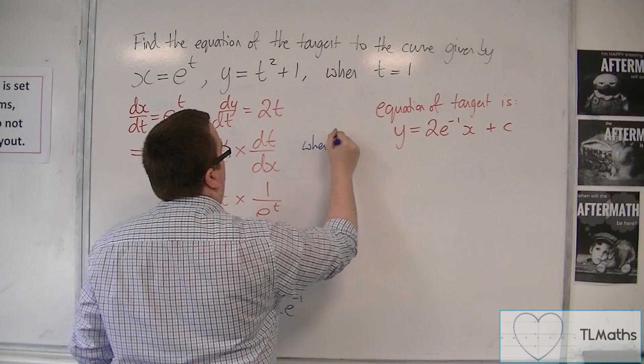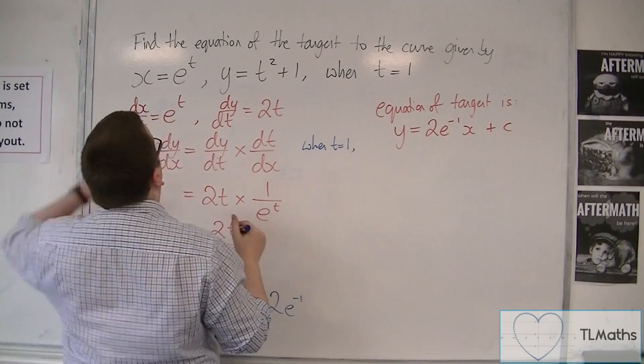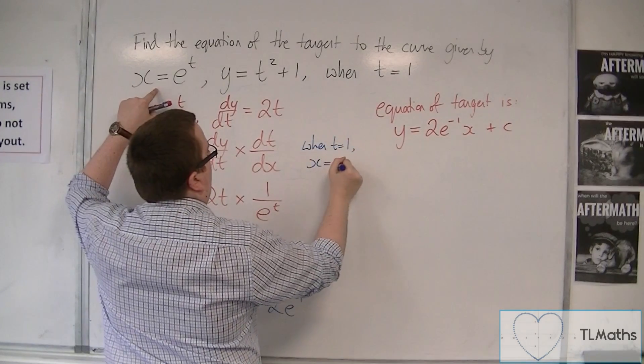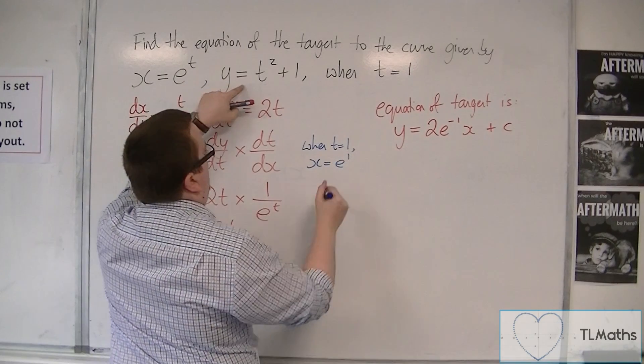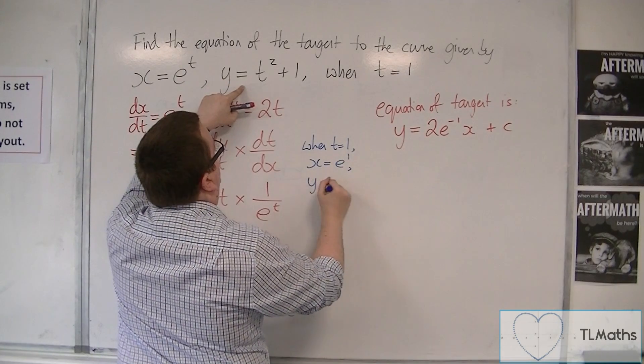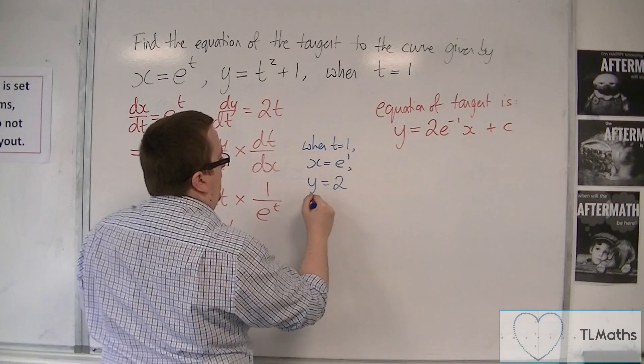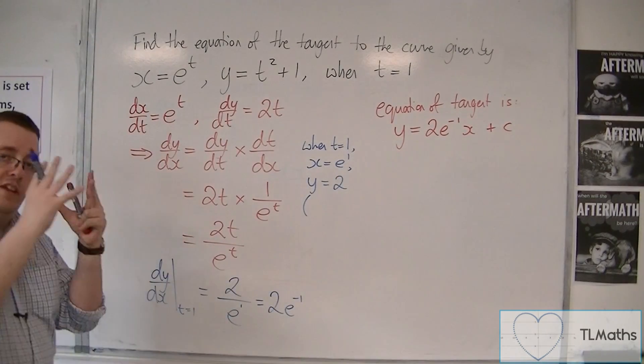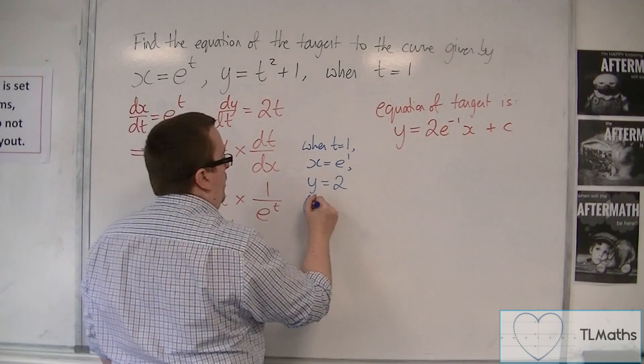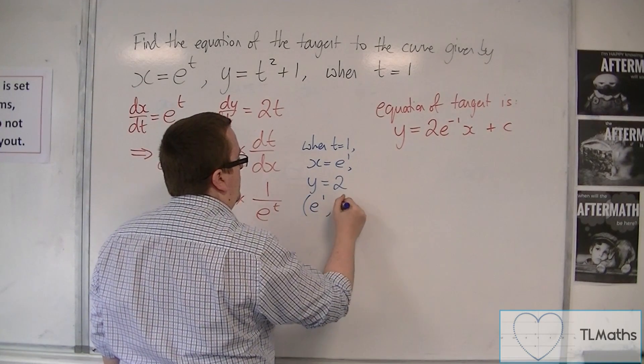So when t equals 1, x equals e to the 1, and y equals 1 squared plus 1. Okay, so just 2. And so the coordinates, the Cartesian coordinates of the point that I'm considering is e to the 1, 2.